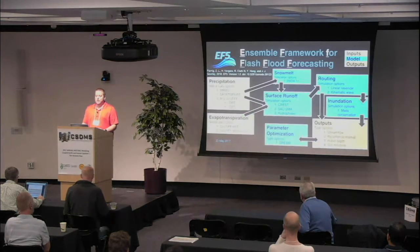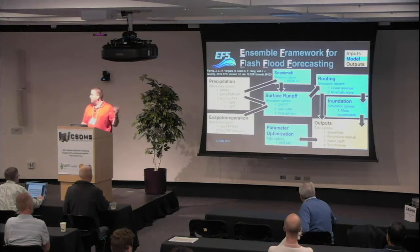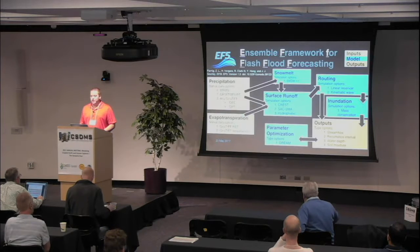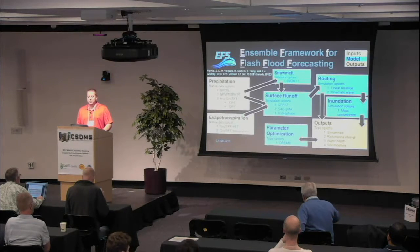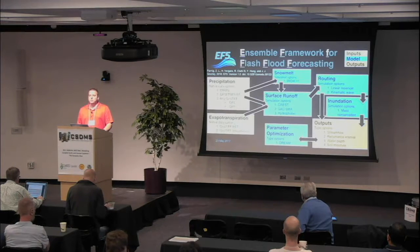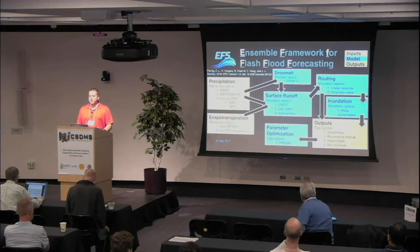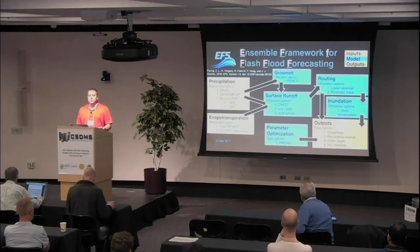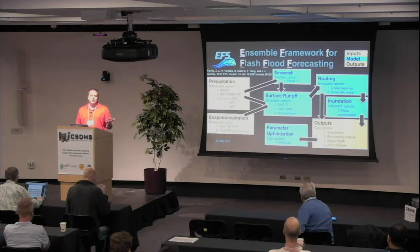I'm going to talk about EF5, which stands for the Ensemble Framework for Flash Flood Forecasting. This is a hydrologic modeling framework we developed at the University of Oklahoma in collaboration with the National Severe Storms Laboratory. The idea was that we wanted a hydrologic model suitable for producing flash flood forecasts at high resolution — one kilometer over the entire U.S. — and to produce these forecasts very rapidly in response to radar-based rainfall occurring every two minutes.